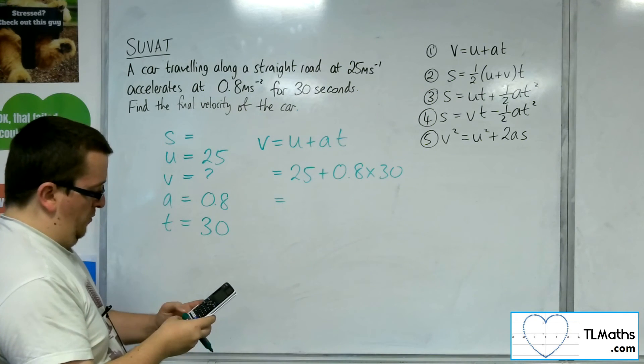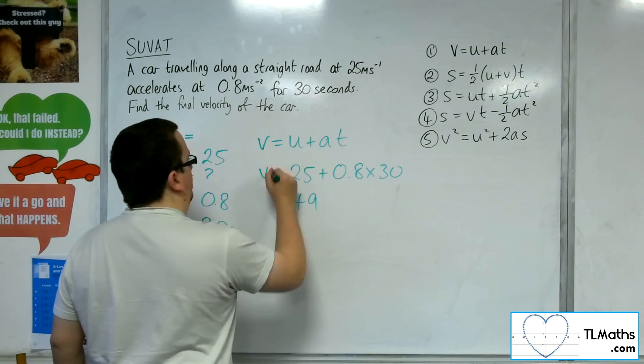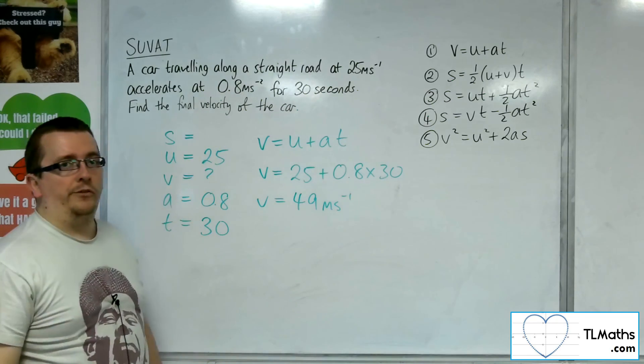So 25 plus 0.8 times 30, and we get 49. So V is equal to 49 metres per second. That's the final velocity.